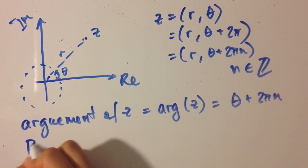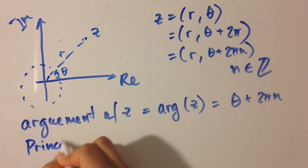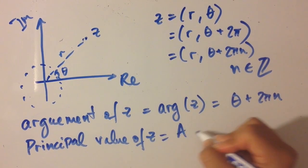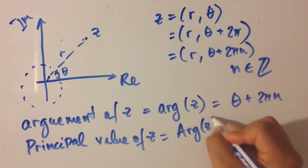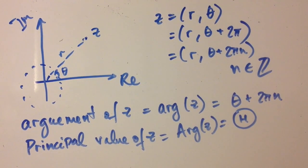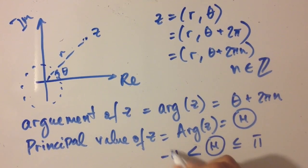Now the principal value of z represented with the capital letter arg z and usually denoted with the fancy big theta is an angle such that theta is less than pi and greater than minus pi.